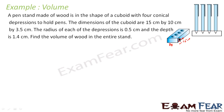The radius of each depression is 0.5 cm, and the depth is 1.4 cm. So for this conical section, this radius r is 0.5 cm and this height is 1.4 cm, as given in the question.